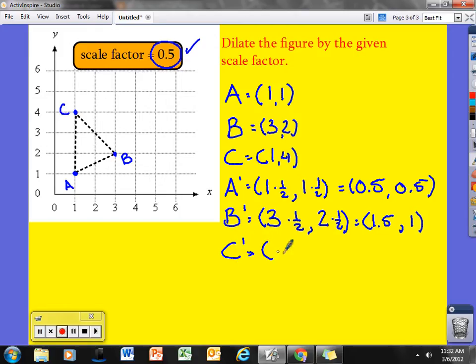C prime was originally 1, 4. I go 1 times a half for the x value and I go 4 times a half for the y value. 1 times a half is a half, 5 tenths. And I know that half of 4 is 2.